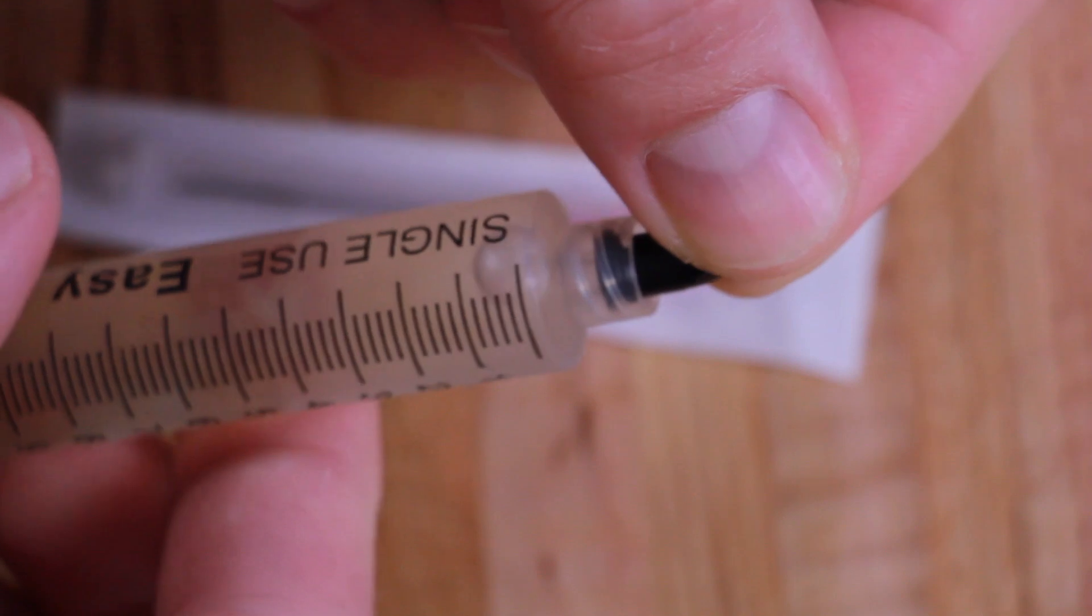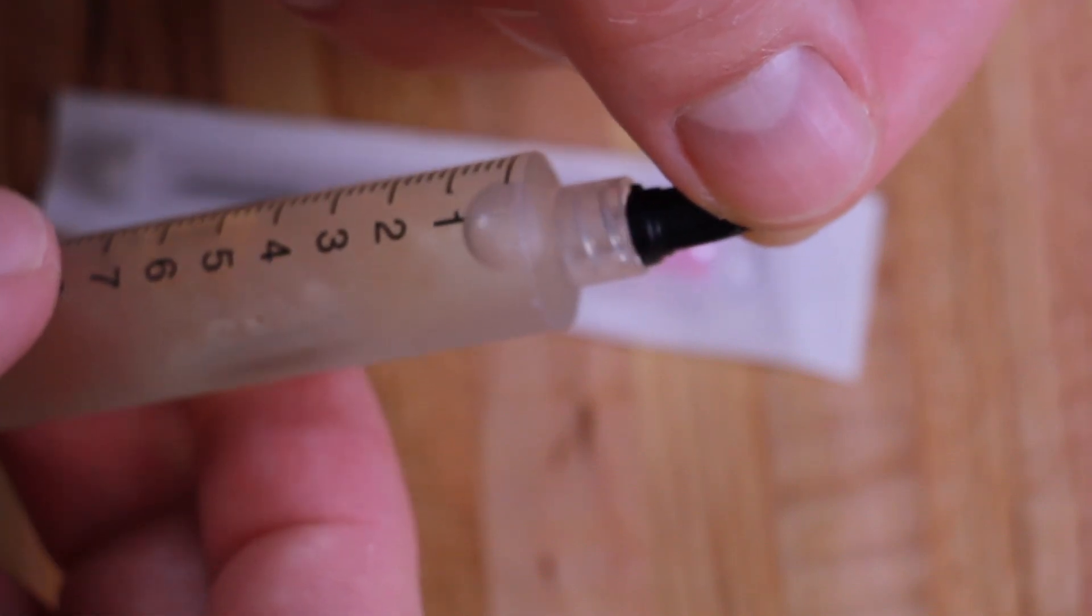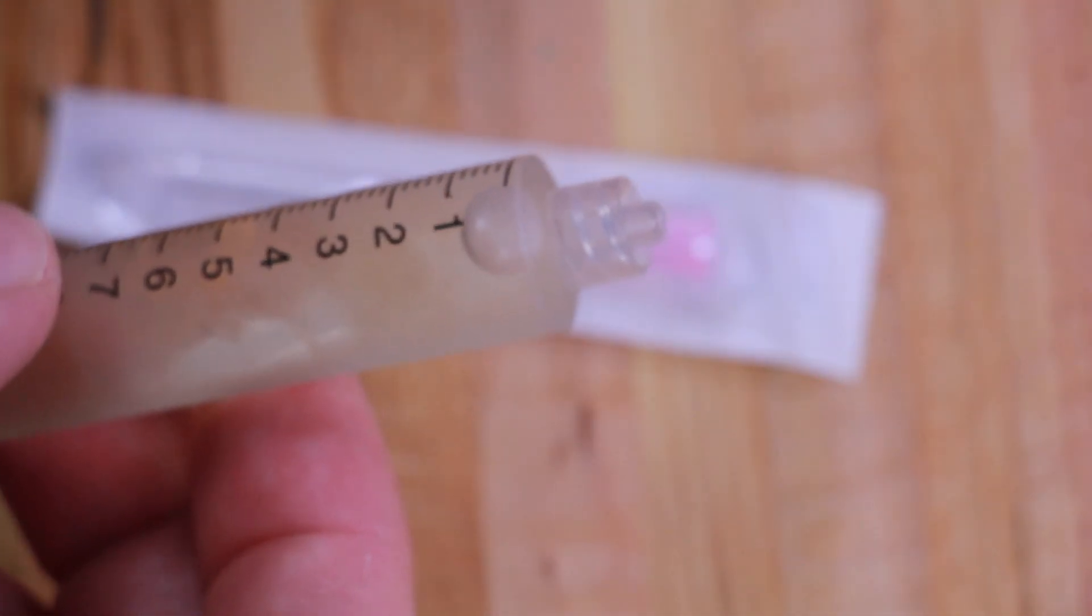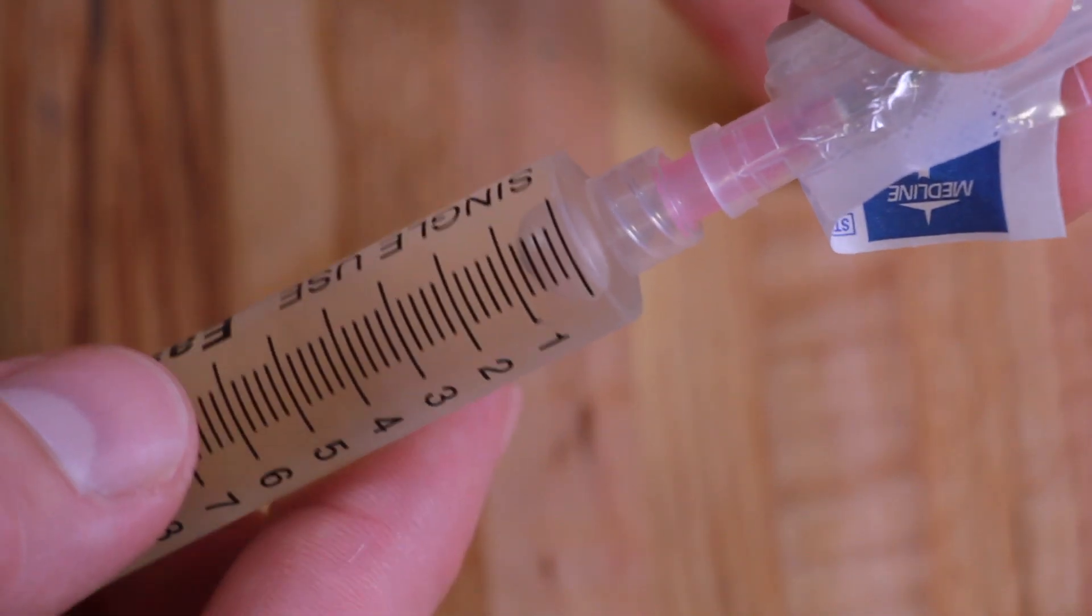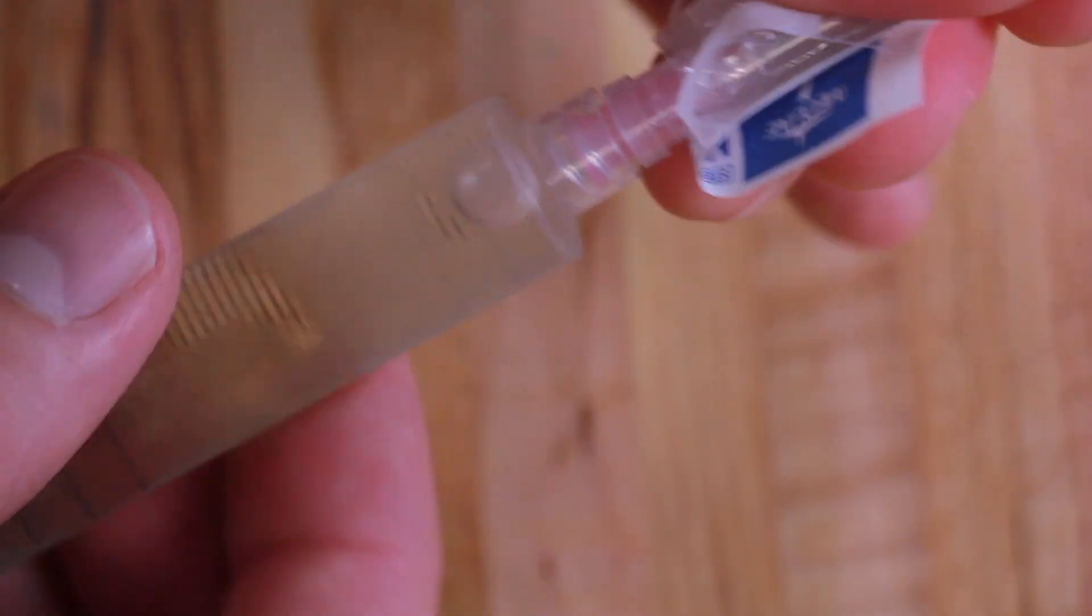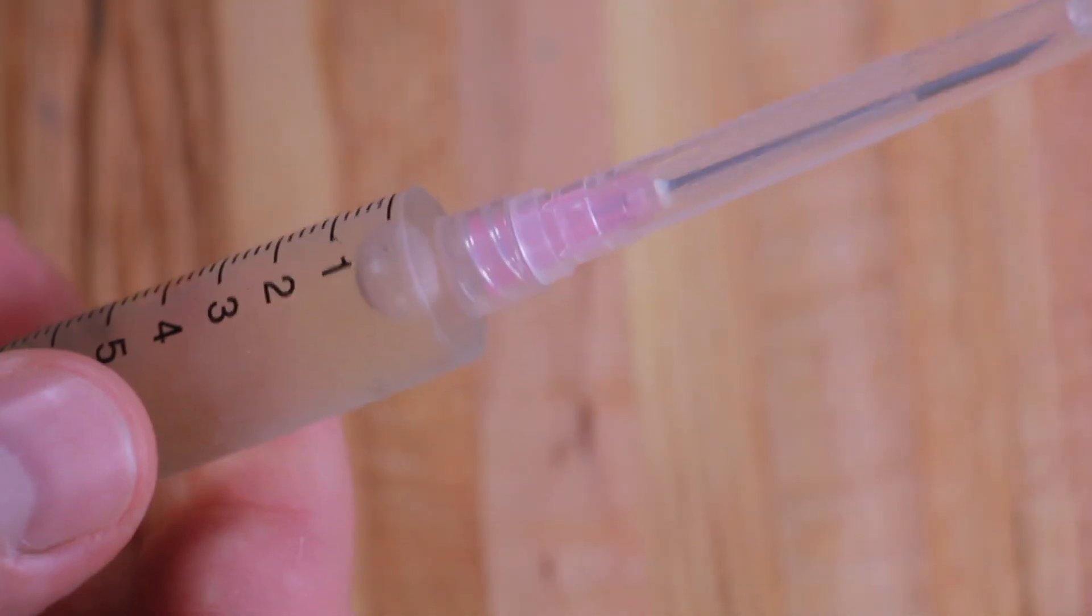Then the cap just unscrews out of the syringe. And the hypodermic needle screws into the syringe like this. You can pull the plastic off, now you're left with a cap over the end of the needle.